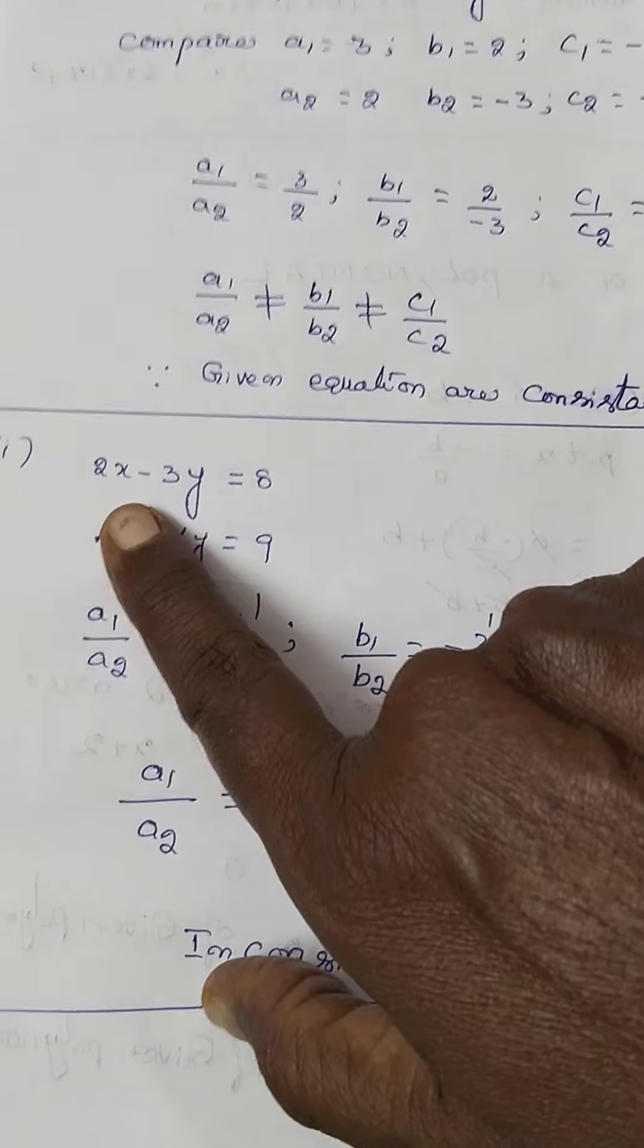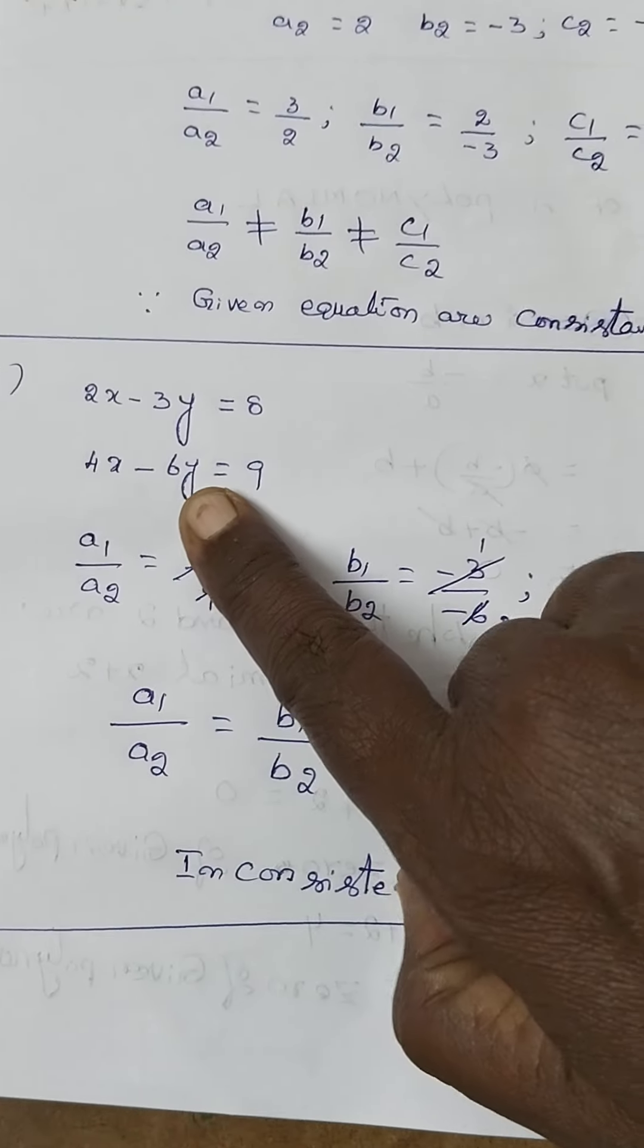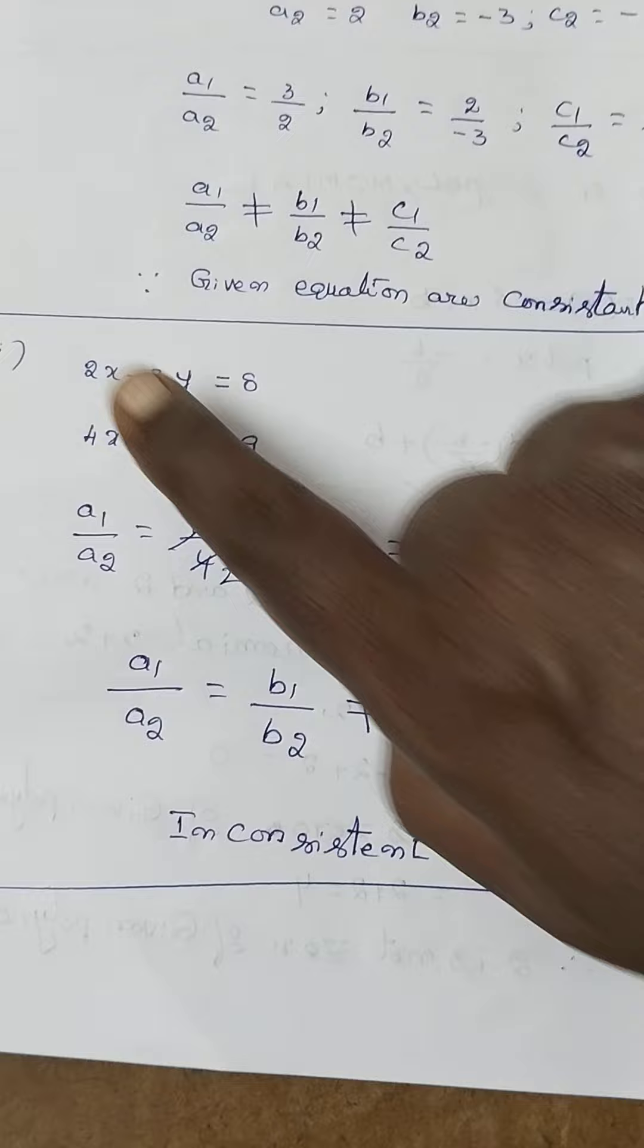Then next, 2x minus 3y is equal to 8, 4x minus 6y is equal to 9, second one, third problem, second one.